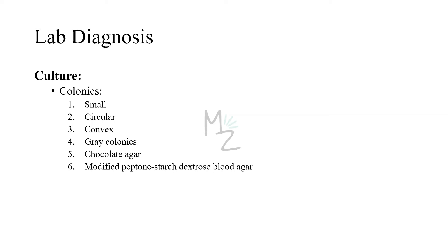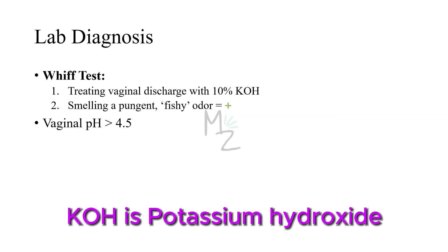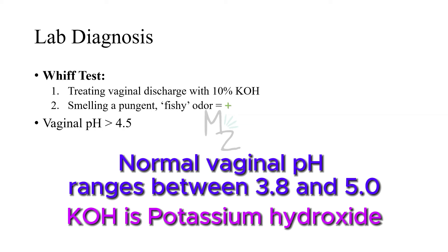Culture: Colonies are small, circular, convex, and grey, appearing on chocolate agar or modified peptone starch dextrose blood agar. On physical examination, we'll find light reflexes on vaginal walls and there might be cervicitis present. The whiff test — which consists of treating vaginal discharge with 10% KOH and detecting a pungent fishy odor — is often positive. We can also measure vaginal pH; a pH greater than 4.5 supports the diagnosis of bacterial vaginosis.